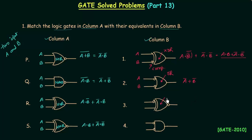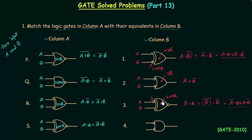The third gate in column B is an XNOR gate with one bubble on input A. So A is complemented and B is not. The output simplifies to A complement·B OR A·B complement. For the last gate we have an AND gate with two bubbles on both inputs, so both inputs are complemented and the output is A complement AND B complement.